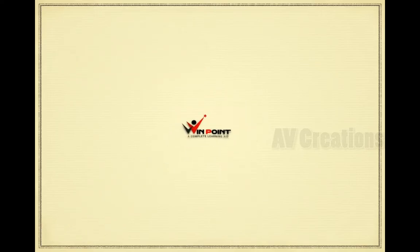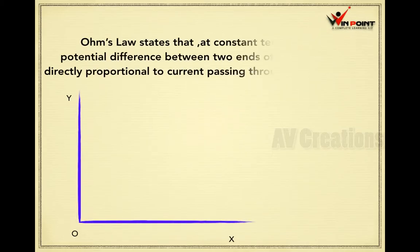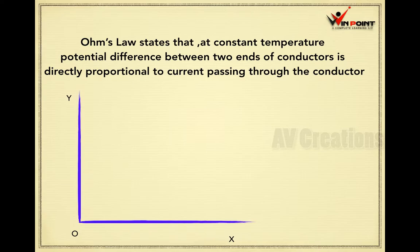Ohm's law states that at constant temperature the potential difference between two ends of conductor is directly proportional to current passing through the conductor. If we are increasing the value of potential, there will be increase in the current. So if we are drawing a graph between current and voltage, it will be a straight line.